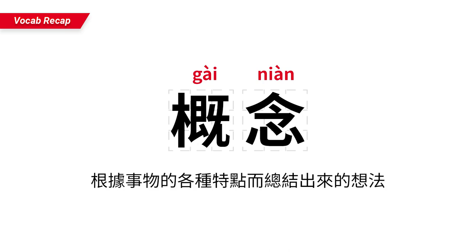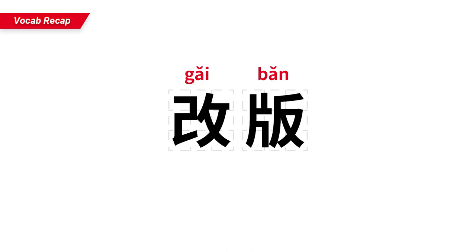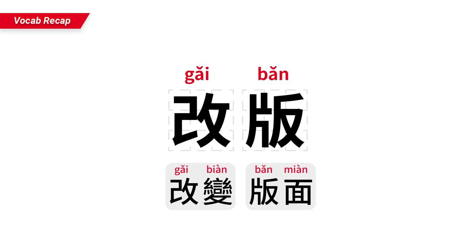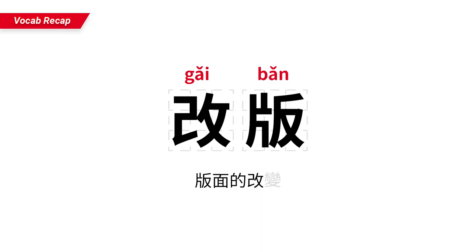改版。改就是改变。版是版面，也就是书、报纸等每一页每一面的安排，比如哪里是字，哪里是图片。改版原来是书籍出版界的专业词汇，意思是版面的改变。现在可以用来形容各种产品的设计安排的改变。比如，新改版的站立式座椅，就是说座椅的设计得到了修改。